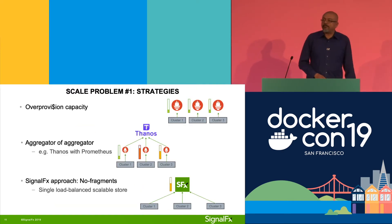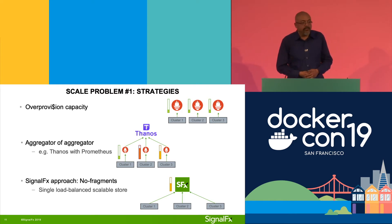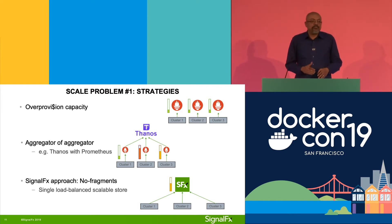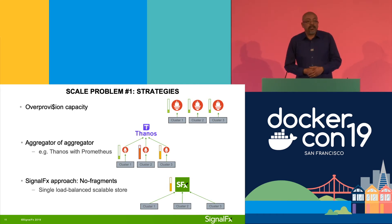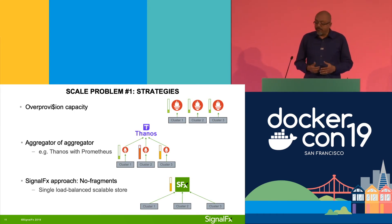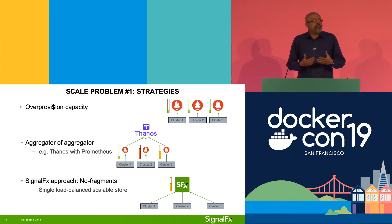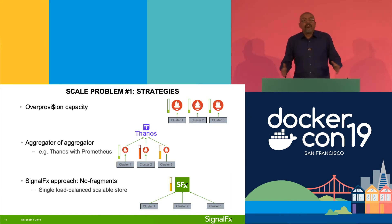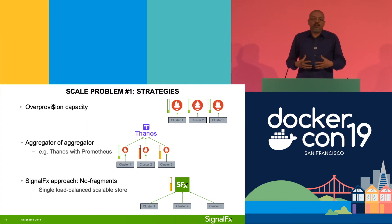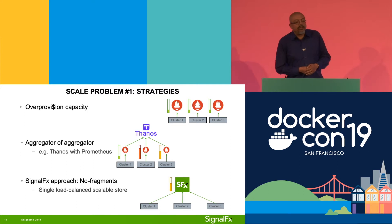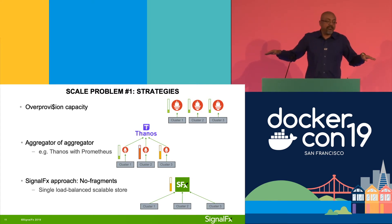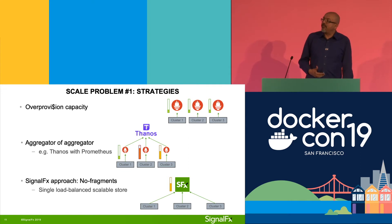How might you solve that problem? Firstly, if you have a lot of money, you can over-provision — this will solve your hotspots problem. But if you don't have so much money, or if you want to solve the fragmentation problem, you could have an aggregator of aggregators. Thanos is a project that does this for Prometheus, for example. At SignalFX, we took a different approach. We said, if fragmentation is a problem, why can't we prevent fragmentation? We store a lot of data in a hugely multi-tenant scalable system, and we spread the data evenly across the whole cluster. When there's an increase in usage, the whole cluster grows gradually, which gives us time to react and prevent hotspots from forming.